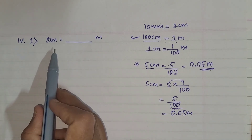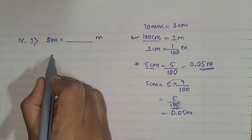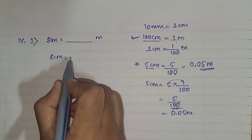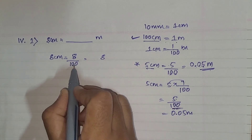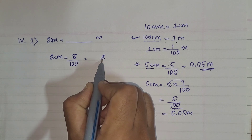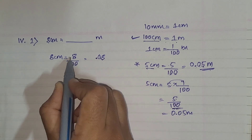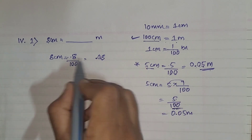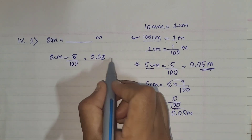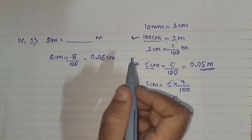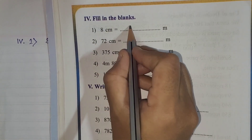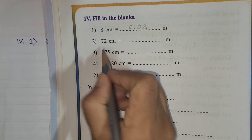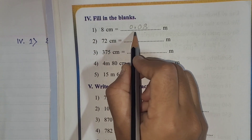Now, 8 centimeters equals 8 divided by 100. Write 8 as-is; there are 2 zeros. We have only one digit, so put zeros to make up 2 places, giving 0.08 meter. So 8 centimeters equals 0.08 meter.